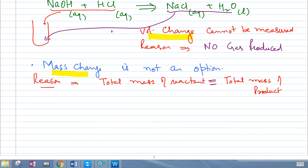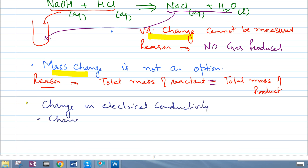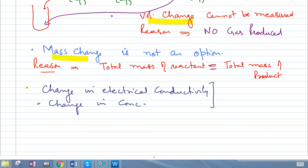So what is the option? You can measure the change in electrical conductivity, or you can measure the change in concentration of either the HCl or the NaOH. These things will be covered in detail at Grade 13 or A2 level. The point is, which method you use depends on the reaction given to you.